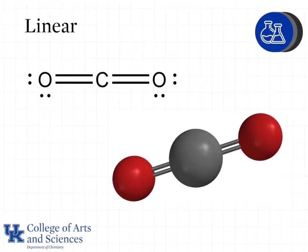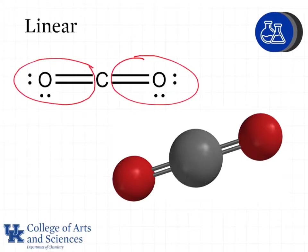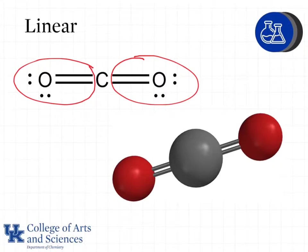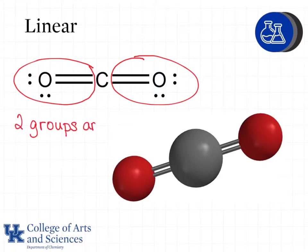Let's look at examples of the different types of shapes of molecules. The first is linear. When we have a central atom with two groups around it, we will have a linear structure. We're only looking at the carbon, which is our central atom, and it has two groups — each of which is a double bond to oxygen. With two groups around the central atom, the geometry is linear. We do not count the lone pairs on the terminal oxygen atoms.